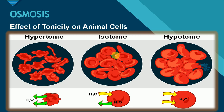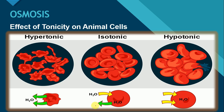When RBCs are placed in the isotonic solution, the volume of cell will remain constant. Kyun cell ka volume wiesse hi rae ga? Because jitni quantity mein water inside the cell move kare ga, utani hi rate per water cell ke outside bhi move kare ga. So volume of the cell will remain constant.